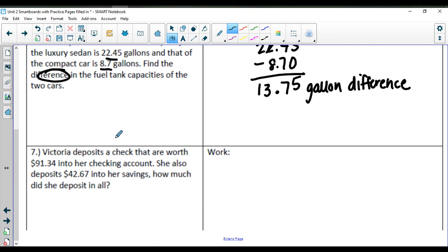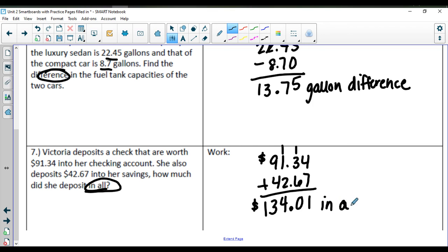The last one here, Victoria deposits a check that is worth $91.34 into her checking account. She also deposits $42.67 into her savings. How much did she deposit in all? So that's asking us to add these two together. So we have $91.34, $42.67. 4 plus 7 is 11, carry my 1, 3 and 6 is 9, plus 1 is 10. So I'll put the 0, carry my 1, bring down my decimal point. 1, 1, and 2 is 4, and 9 plus 3 is 13. So she deposited $134.01 in all.